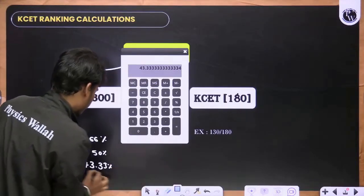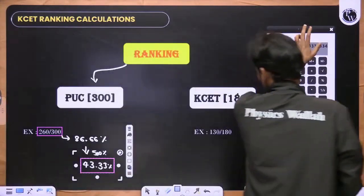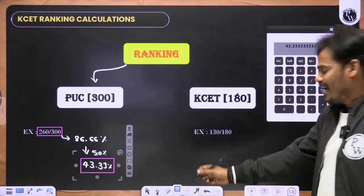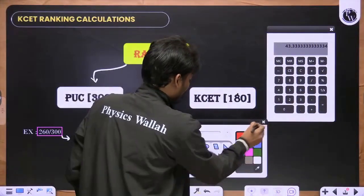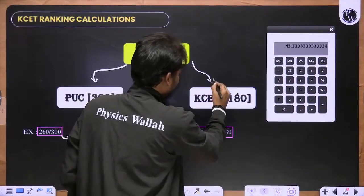So this is from board end. And then KCET - KCET is out of 180 marks. This is the second category.